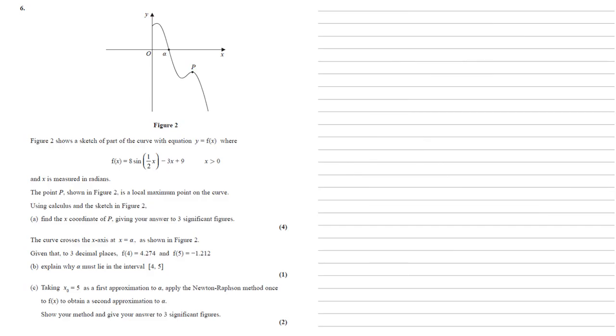The curve crosses the x axis at x equals alpha, as shown in figure 2. Given that to 3 decimal places, f of 4 equals 4.274 and f of 5 equals minus 1.212, for part b we need to explain why alpha must lie in the interval 4 to 5.